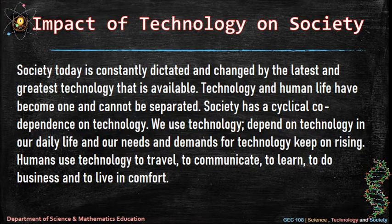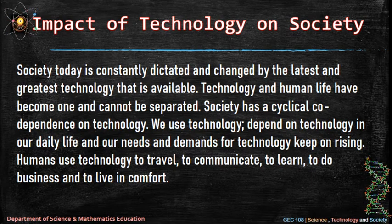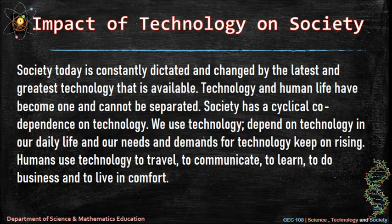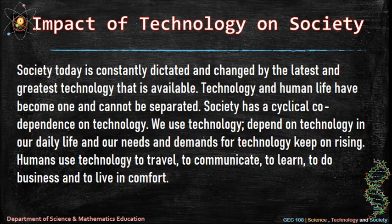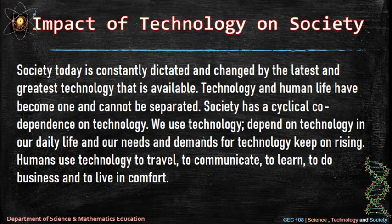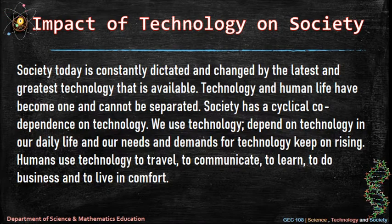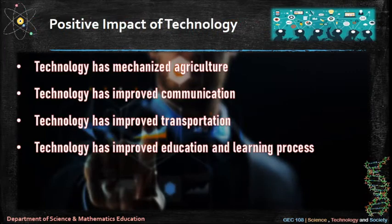Impact of technology on society: society today is constantly dictated and changed by the latest and greatest technology available. Technology and human life have become one and cannot be separated. Society has a cyclical co-dependence on technology — we use technology, depend on technology in our daily life, and our needs and demands for technology keep on rising. Humans use technology to travel, to communicate, to learn, to do business, and to live in comfort.